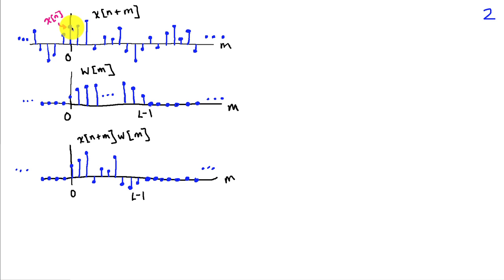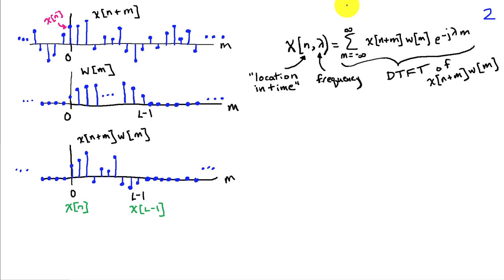If I multiply this by a window w of m, I'm going to extract these values which span from x of n up through x of l minus 1. We're going to take those values and use them in a discrete time Fourier transform as indicated here. We'll let value n be the location in time, then introduce a variable lambda which represents frequency, and take the discrete time Fourier transform of this product x of n plus m times w of m.